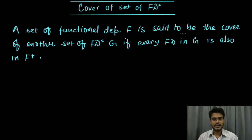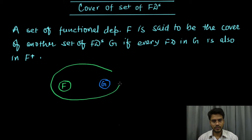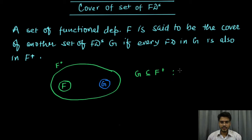A set of functional dependency f is said to be the cover of another set of functional dependency g if every functional dependency in g is also there in f plus. So let's say this is our functional dependency f and this is our f plus, and this is another functional dependency g. All the functional dependencies in g are also there in f plus, that is g is a subset of f plus. In this case we say that f covers g.